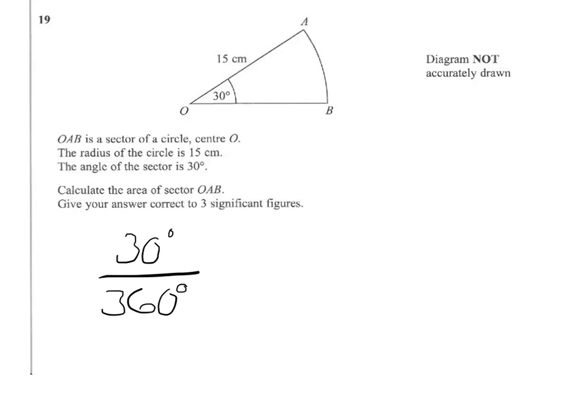So we can see that our sector is going to be one-twelfth of the circle that has an area of π times 15 squared.